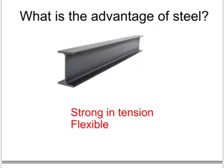Steel is another material used extensively in construction, for example for making the framework of new buildings. It is very strong in tension — that means that you can pull it or try to bend it and it will flex a little, but it won't break.